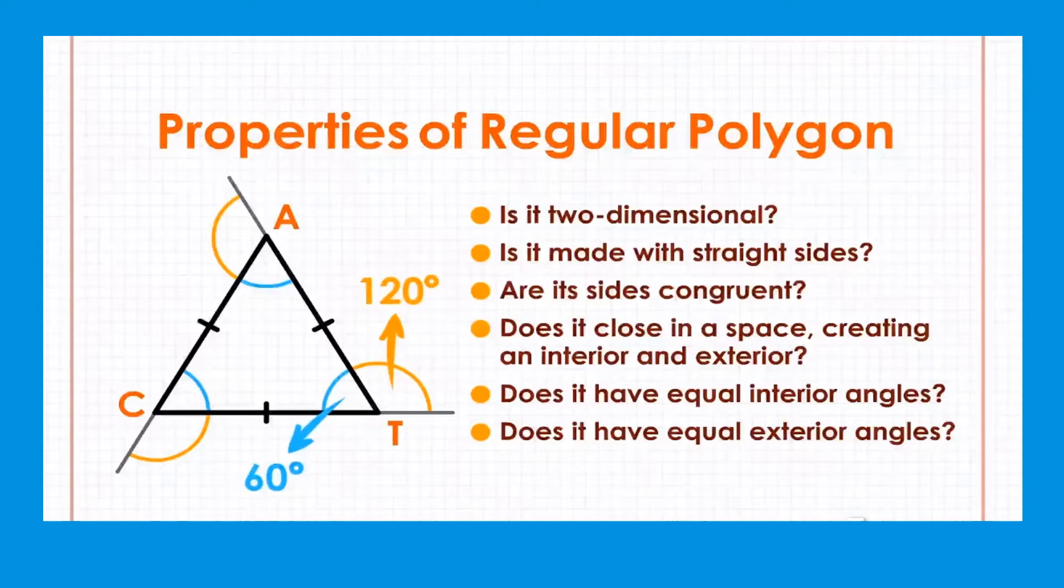Look at the shape, the example of regular polygons. It is a triangle, and the angle is 60 degrees and 120 degrees. The line is a side, and the straight side.